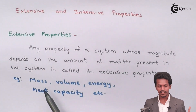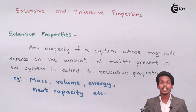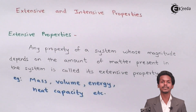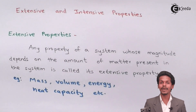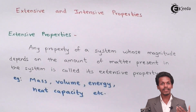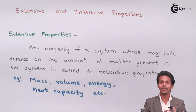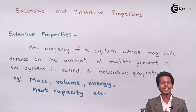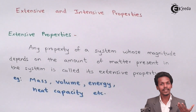Examples of extensive properties include mass, volume, energy, and heat capacity. Mass is made up of matter — a combination of various matters — and volume is also a combination of various matters, so that we can measure the volume of a particular liquid or gas. In both cases, the magnitude depends on the amount of matter of the substance.